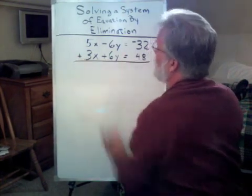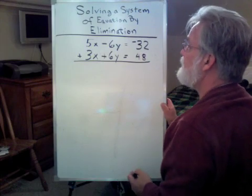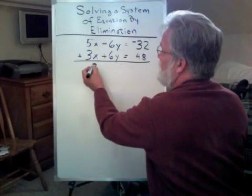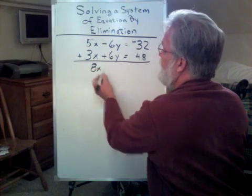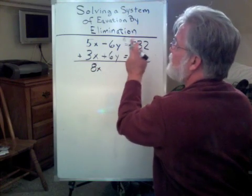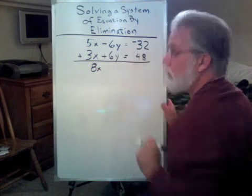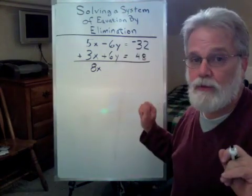What's so cool about it is, when we add them, we get 8x here and 6y plus a negative 6y is zero. So there you go, we've eliminated the y.